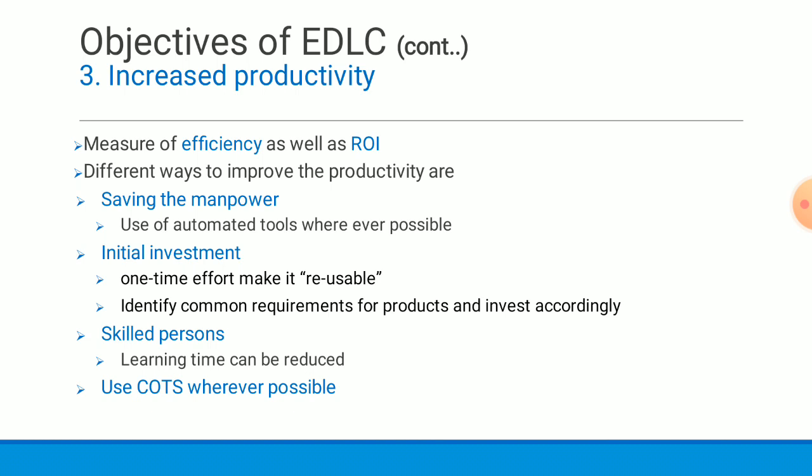These are the three objectives of EDLC: ensuring high quality for the product, risk minimization and defect prevention through project management, and increased productivity. The remaining topics — different phases and EDLC approaches — will be discussed in the next video. Thank you.